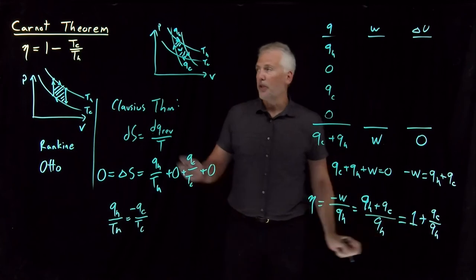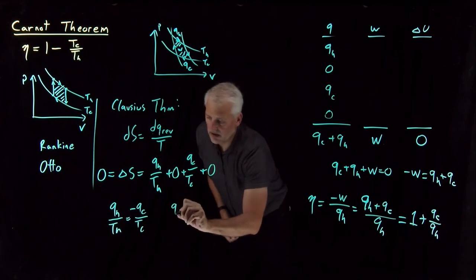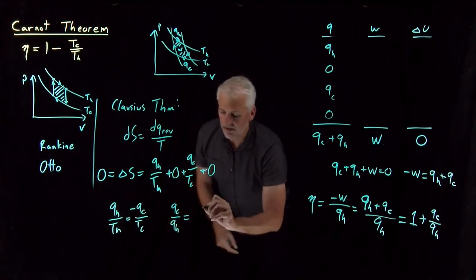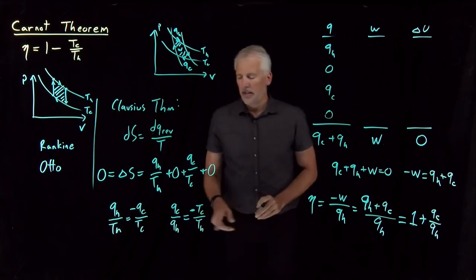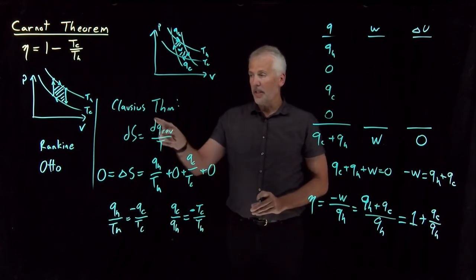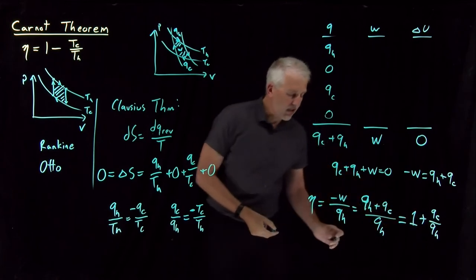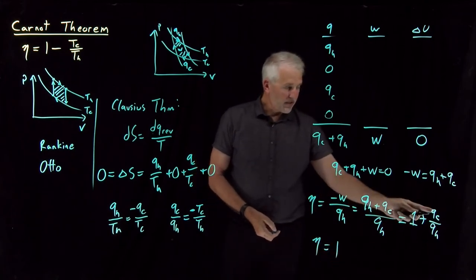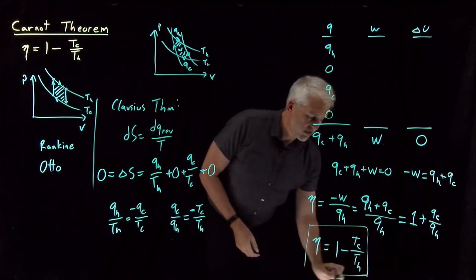Or since what I'm interested in is ratios of Qs or ratios of Ts, let's rearrange this a little bit and write QC over QH. So I'm going to take this QH and bring it down underneath the QC. And then I have to take that TC and put it above the TH. So QC over QH, and there's a negative sign involved, is negative of TC over TH. That's what I get by rearranging this equation. So I can use that. The Clausius theorem applied to this cyclic process tells me that this ratio of heats is negative the ratio of the temperatures. So if I plug that in here, I find that the efficiency is one. Instead of plus QC over QH, I've got minus TC over TH.